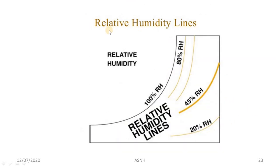The relative humidity lines are curved lines parallel to the saturation line. The outermost line is the saturation line at 100% relative humidity, and the parallel lines have values less than 100%, continuously decreasing.